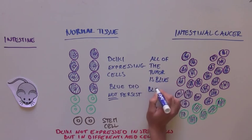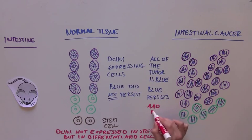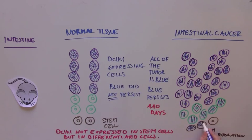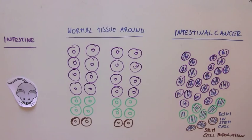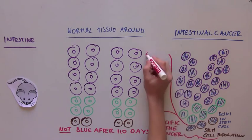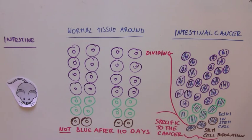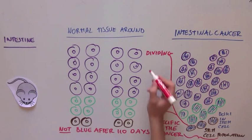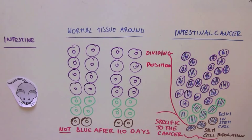And importantly, the tumors stayed blue for over 110 days. This suggested that DCLK1 was present in some stem cell population that kept dividing and persisted over time. Because the normal tissue around the tumor was not blue after 110 days, this meant that these stem cells were specific to the cancer. They studied these DCLK1 cells a little closer and confirmed that they were dividing and were present at the same position as normal stem cells, but they were only found in cancer.